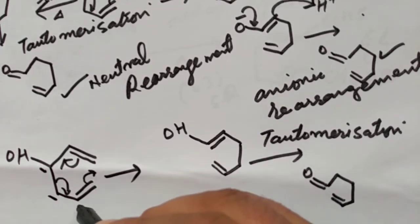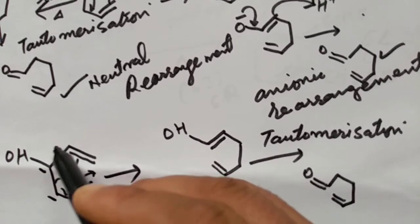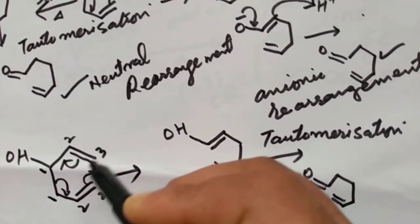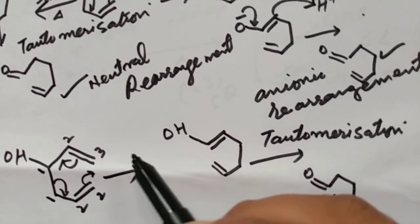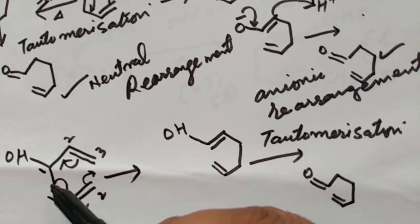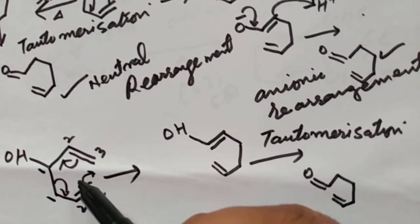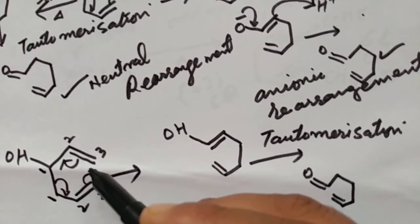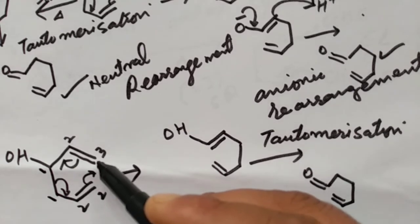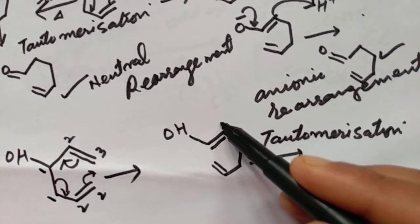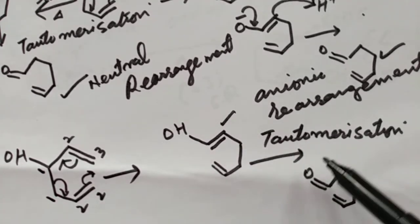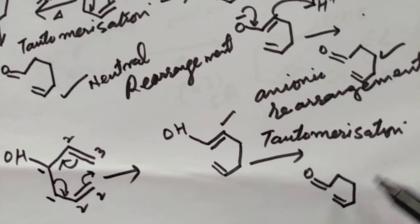Both ends of the old sigma bond are numbered 1, 2, 3 on each side. This bond breaks — it is a 3,3-sigmatropic rearrangement because the new sigma bond is formed between the third carbon atom on one side and the third carbon atom on the other side. We get this compound, which on tautomerization forms the final product.